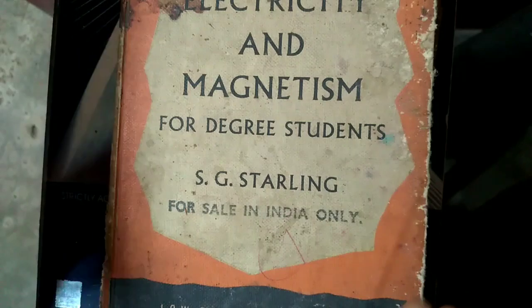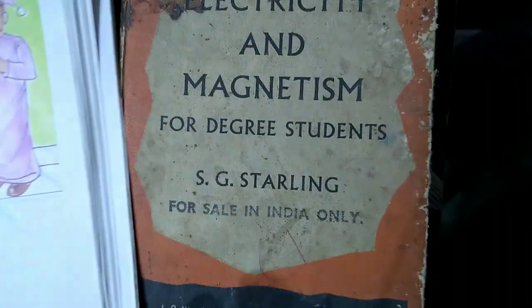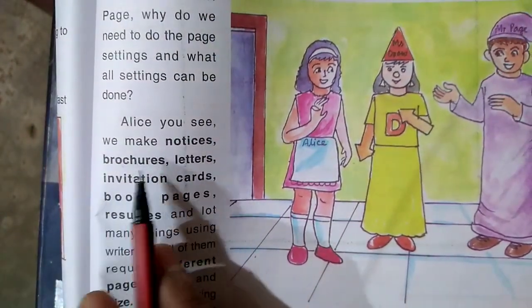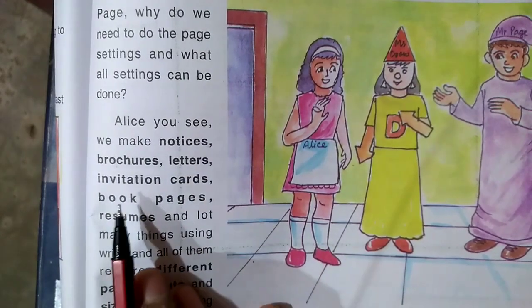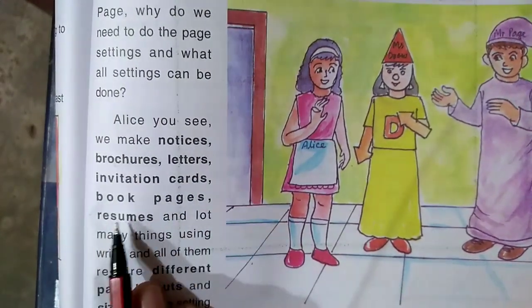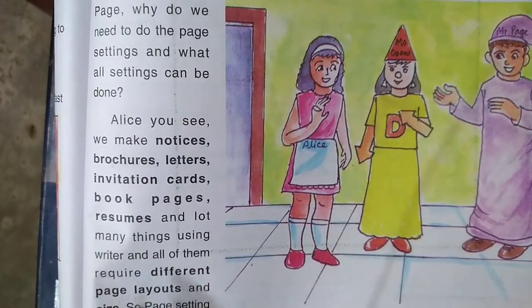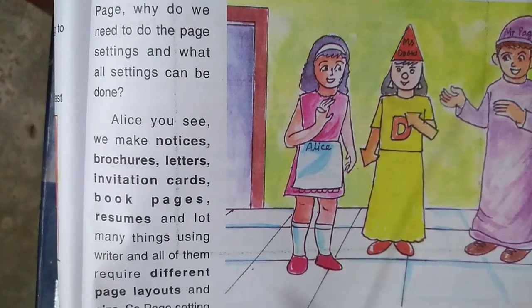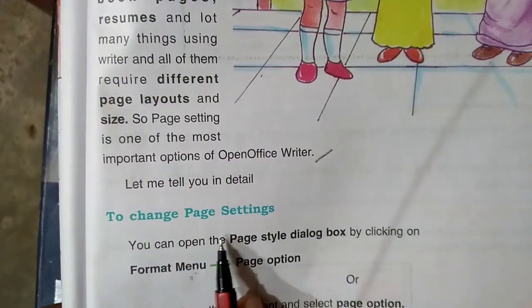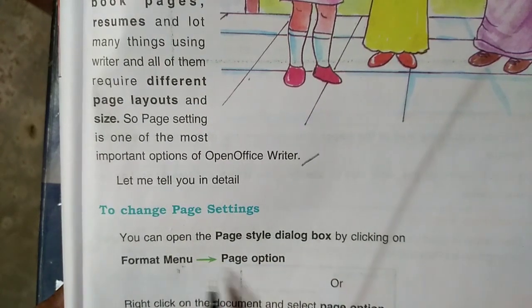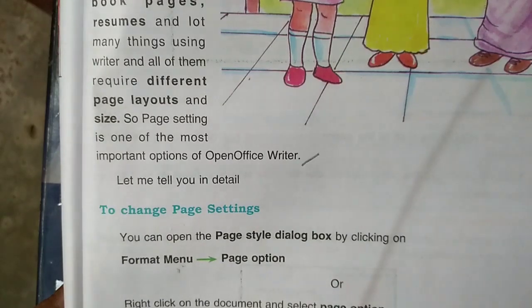Now, there is a need for an invitation card. How do you create an invitation card in a computer? We make notices, brochures, letters, invitation cards, book pages, resumes, and many other things using Writer, and all of them require different page layouts and sizes. To change page settings, you can open the page style dialog box by clicking on the Format menu, then Page option, or right-click on the document and select the Page option.